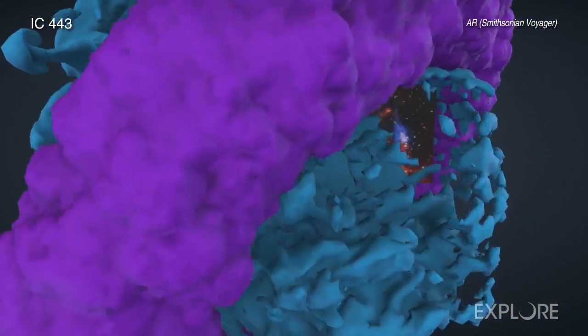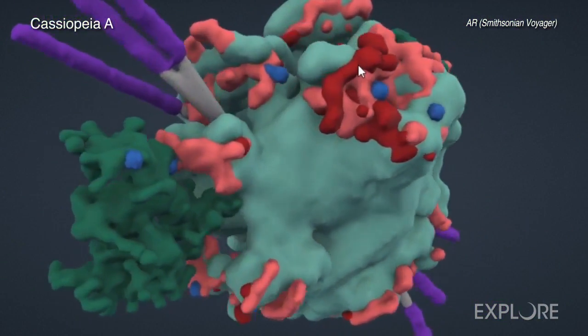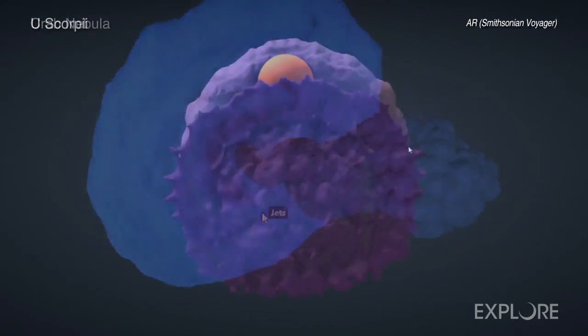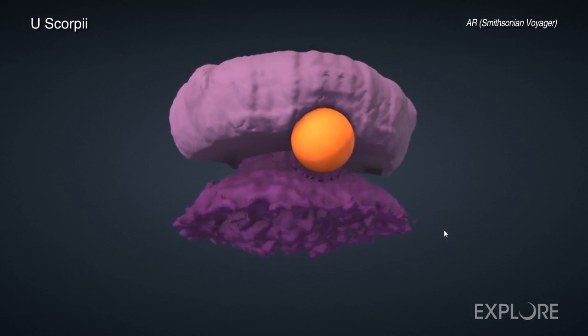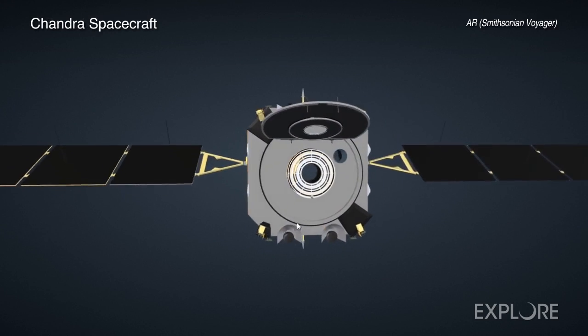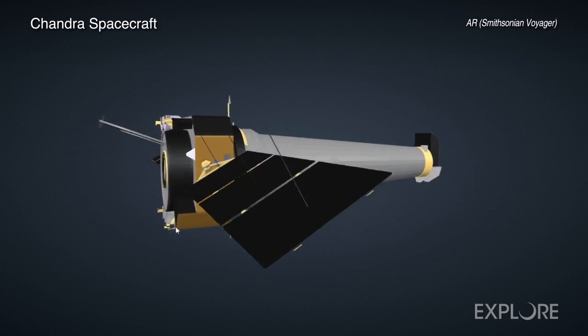IC443 joins other supernova remnants such as Cassiopeia A, Tycho, and the Crab Nebula, along with other stages of stellar evolution, as well as the Chandra spacecraft itself, all available in the Chandra contribution to the Voyager platform.